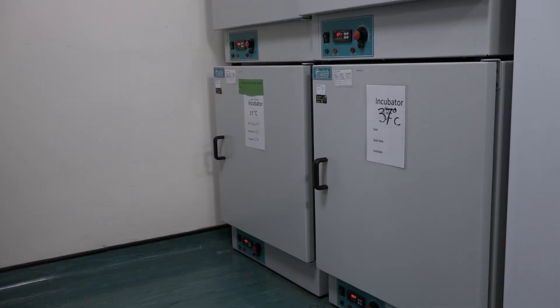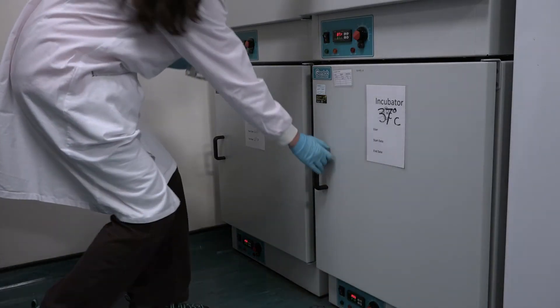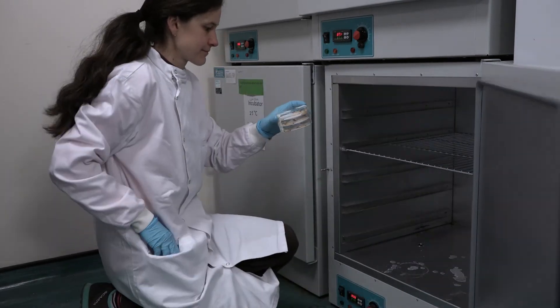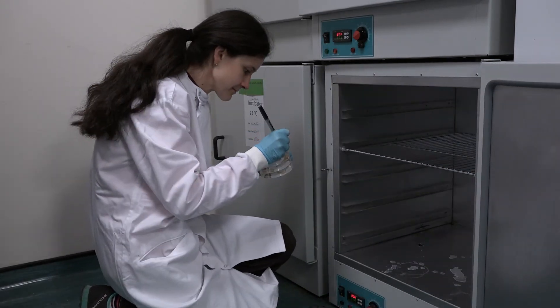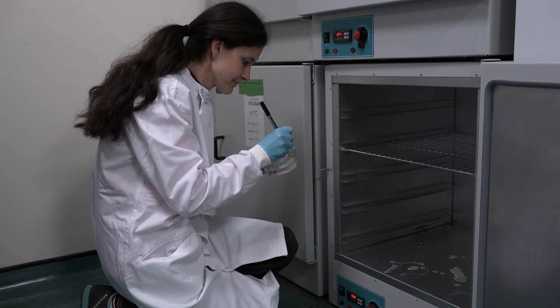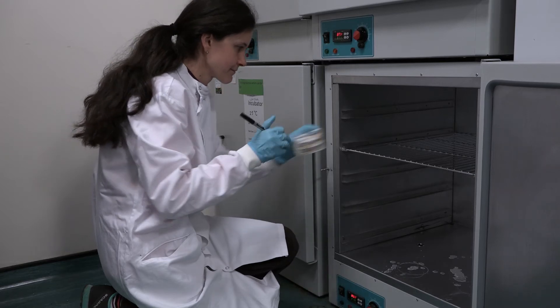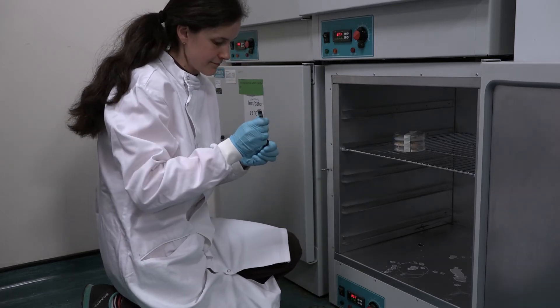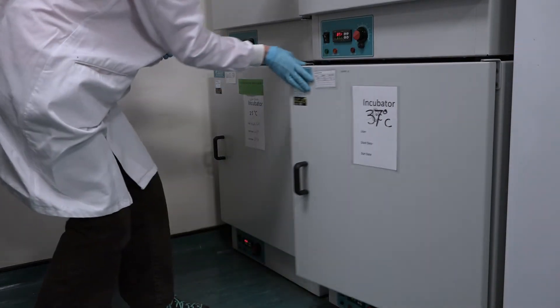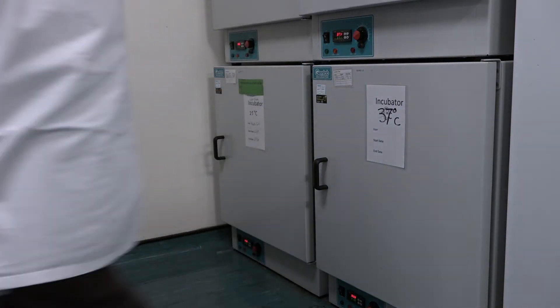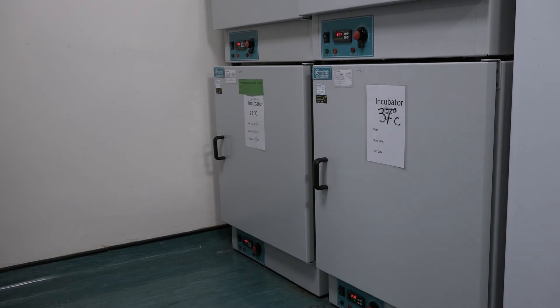Once injected larvae can be incubated at 37 degrees. Another advantage of the Galleria melanella model system is that temperature regulated genes can be switched on at human body temperature. Multiple time points may be used to assess larvae, for example 4 hours, 24 hours, 48 hours and 72 hours post injection.